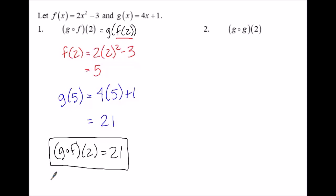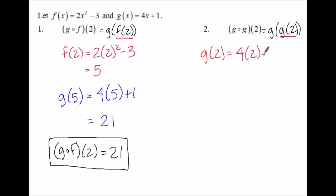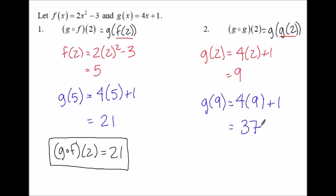A fun thing with compositions is that you can compose a function with itself. So g of g of 2 means we start on the inside and find g of 2 first. Plugging 2 into g of x gives us 9. Then we plug 9 into g of x and get 37. So g of g of 2 equals 37.